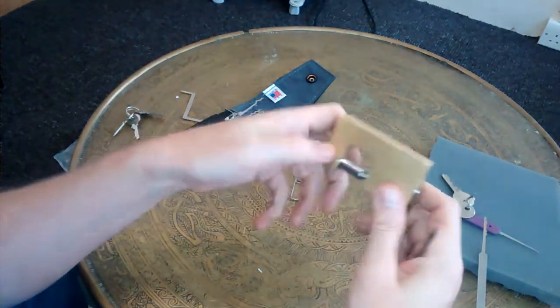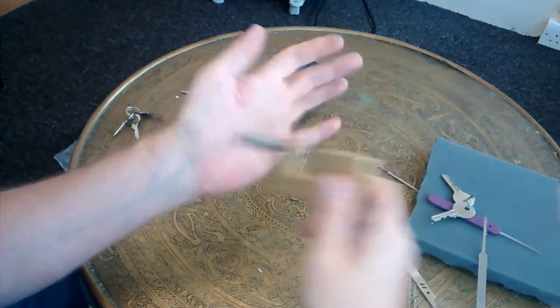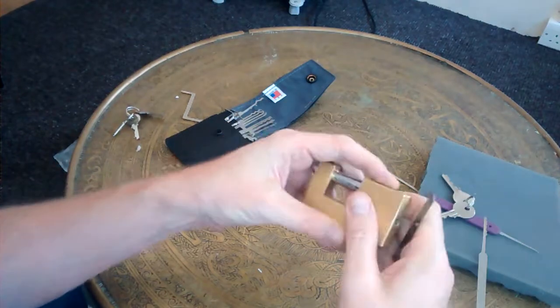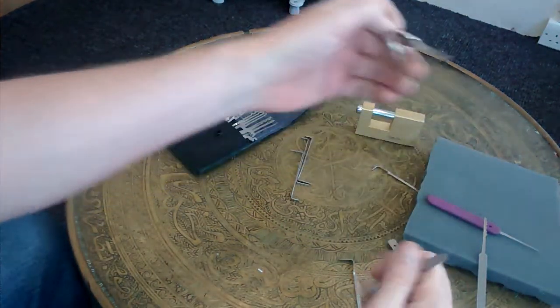There you go. So, rake, single pin picked. Can't be shimmed, obviously, because there's a ball bearing in there. I'd say that's done.